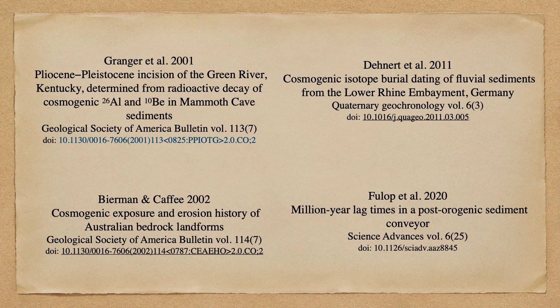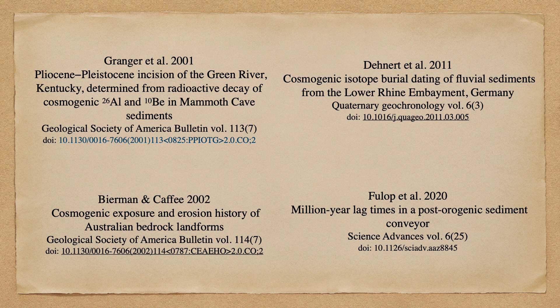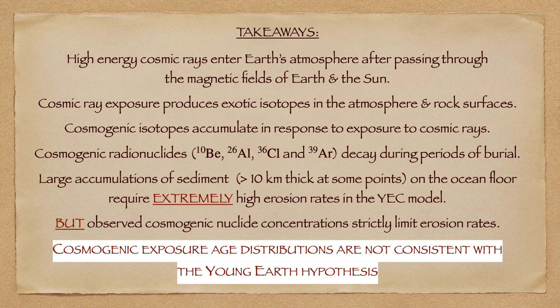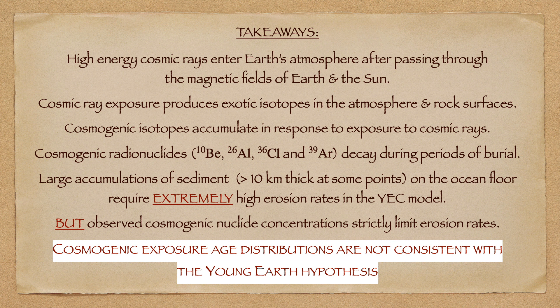So that's where I'm going to draw a line under cosmogenic exposure age dating today. Just to recap what we've covered, cosmic rays enter earth's atmosphere and collide with atomic nuclei to form exotic isotopes. This occurs both in the atmosphere and in the exposed surfaces of rocks. Sustained exposure to cosmic rays will result in an accumulation of these exotic isotopes within the impacted samples. This accumulation may be interrupted by periods of burial or offset by episodes of erosion and sediment transport.